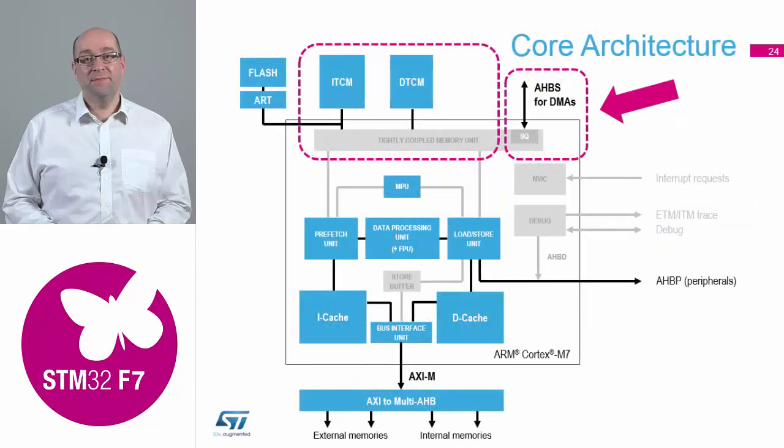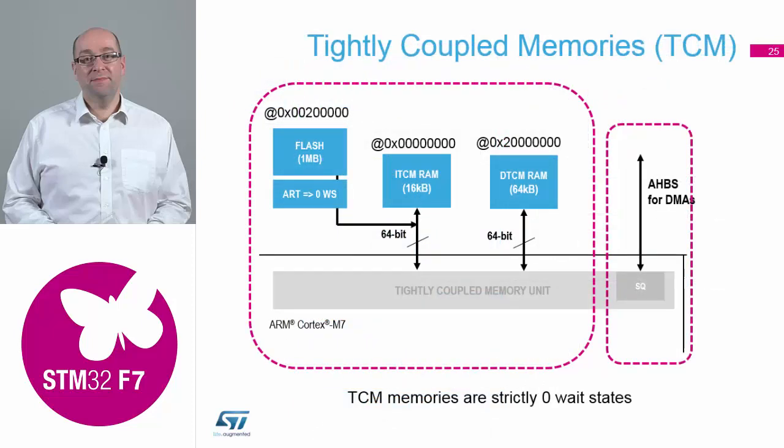If we go back to our block diagram of the core, we're going to look at the top half of the block diagram, which is the tightly coupled memories. Zooming in on the diagram, we have our 64-bit bus architecture linking our tightly coupled memory unit, which is part of the ARM core, to our external memories available on the bus.